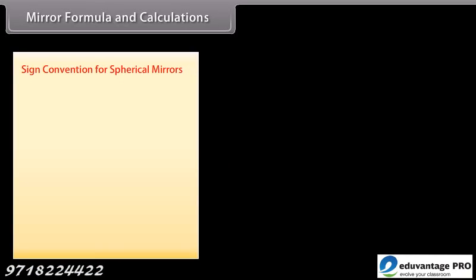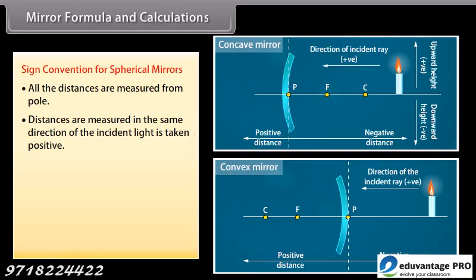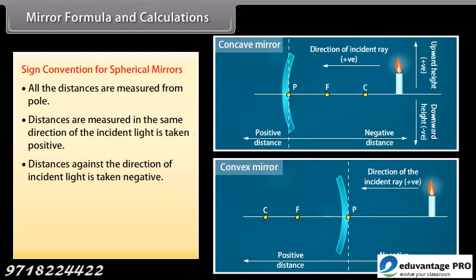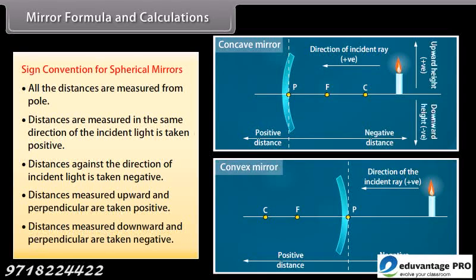Sign convention for spherical mirrors: all distances are measured from the pole. Distances measured in the same direction as the incident light are taken as positive. Distances against the direction of incident light are taken as negative. Distances measured upward and perpendicular are positive; distances measured downward and perpendicular are negative.